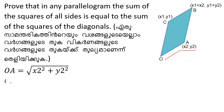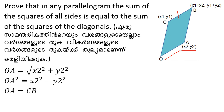That square will cancel the root, so OA squared equals x₂ squared plus y₂ squared. OA equals CB, so CB is also equal to the parallelogram side. CB squared is equal to x₂ squared plus y₂ squared.